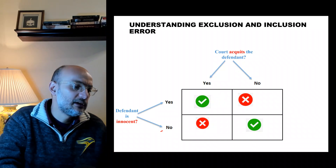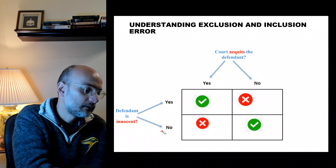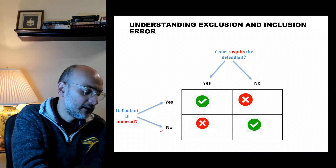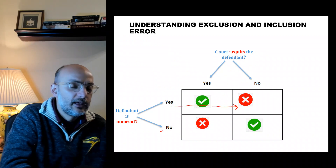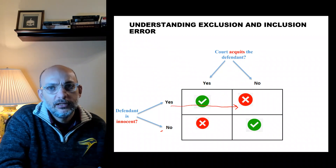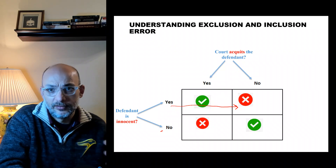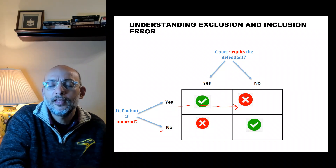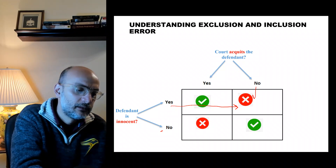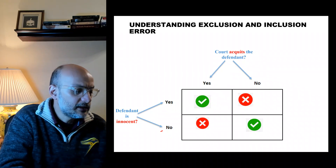The first error: the individual is innocent, yet the court concluded that the individual committed the crime. The individual is innocent, says so honestly, but the court makes the wrong decision and sends him to jail — they didn't acquit him. That is one error.